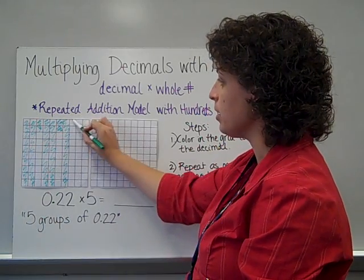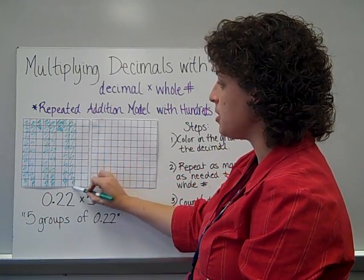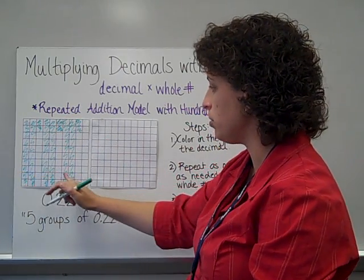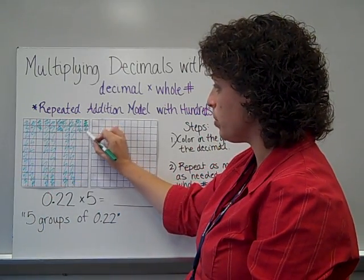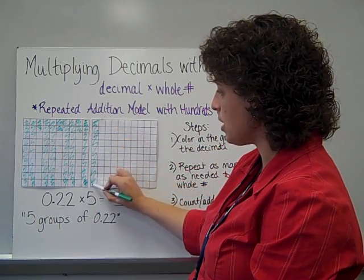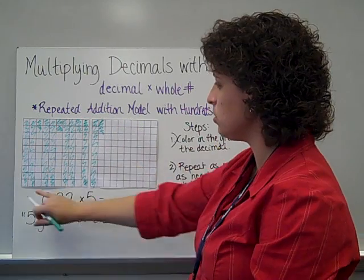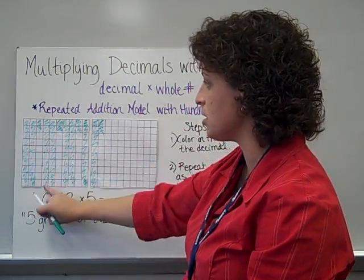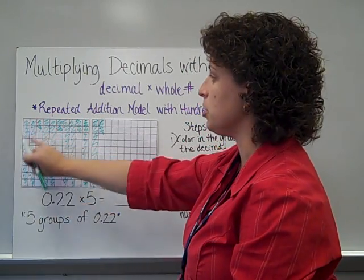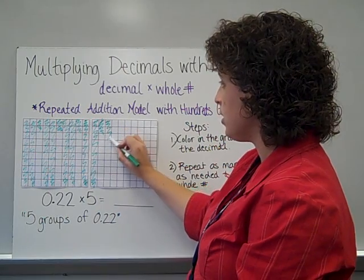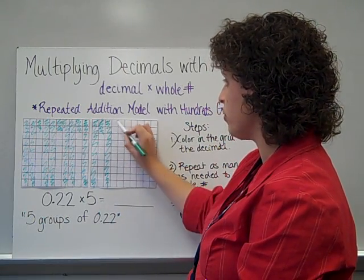I keep repeating this step until I have colored in 22 hundredths 5 times. There's 1, 2, 3, so here would be the 4th, 10, 20, 21, 22. And as I'm going back, I can tell how many times I've colored it because of these 20s and then the little 2. So there was 1, 2, 3, 4 times I've colored it, and this will be the final time, the 5th time.